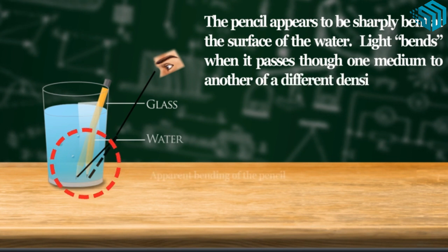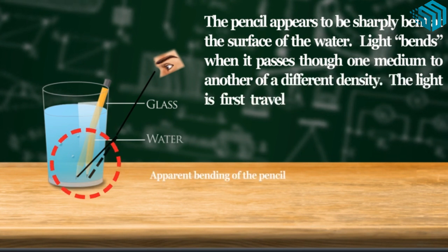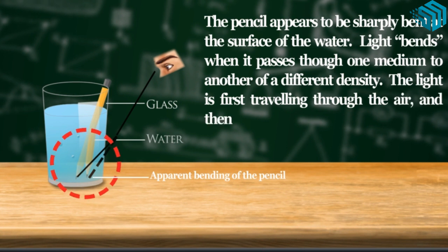The light is first traveling through the air, and then it passes through the water.